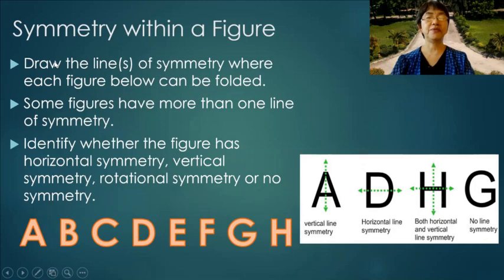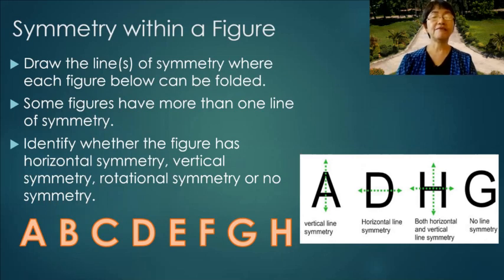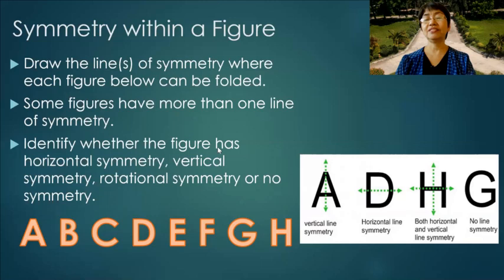Symmetry within a figure: draw the lines of symmetry where each figure below can be folded. Here we have the letters of the English alphabet. Some figures may have more than one line of symmetry, and you can identify whether a figure has horizontal symmetry, vertical symmetry, rotational symmetry, or no symmetry at all.